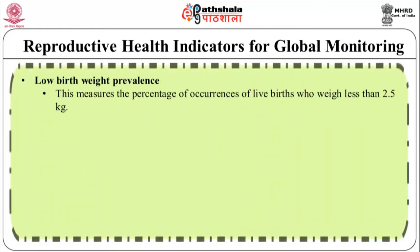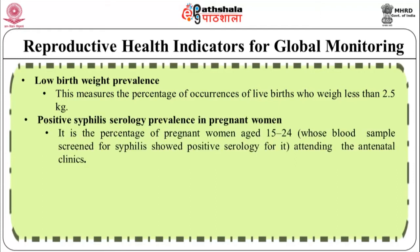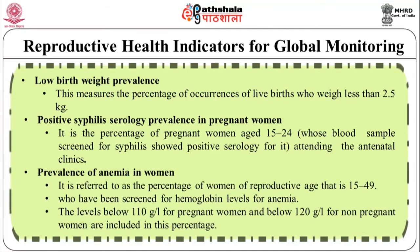Low birth weight prevalence measures the percentage of live births who weigh less than 2.5 kg. Positive syphilis serology prevalence in pregnant women is the percentage of pregnant women aged 15 to 24 whose blood samples screened for syphilis showed positive serology attending antenatal clinics. Prevalence of anaemia in women refers to the percentage of women of reproductive age (15 to 49) screened for haemoglobin levels for anaemia — levels below 110 grams per litre for pregnant women and below 120 grams per litre for non-pregnant women are included.